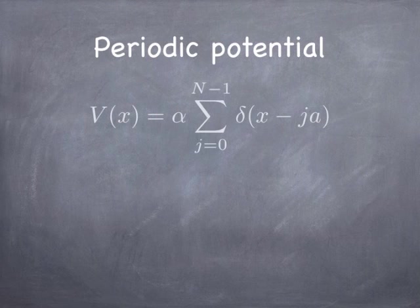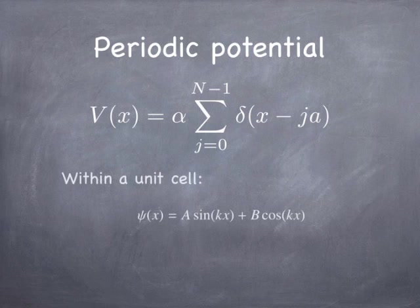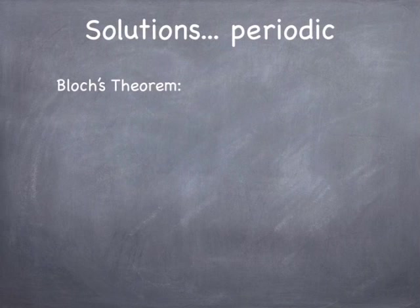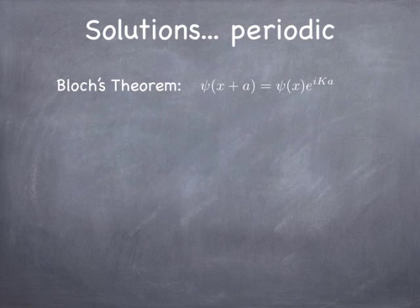Let's talk about a periodic potential. One way to make a periodic potential in one dimension is as a superposition of delta function potentials — we had some experience with those in Chapter 2. Within a unit cell there's no potential at all, so we're talking about a free particle, which means some superposition of sine and cosine. There's Bloch's Theorem, which says that if you have a periodic potential, the wave function in any other place is periodic: the wave function at point x+a equals the wave function at x multiplied by a complex exponential e^{iKa}, where K is a real value called the crystal momentum.